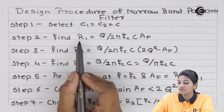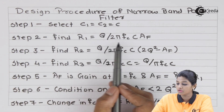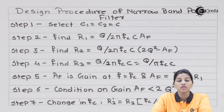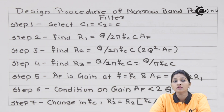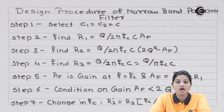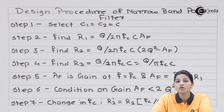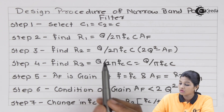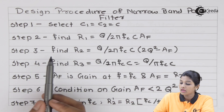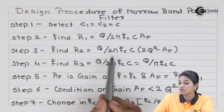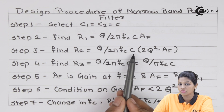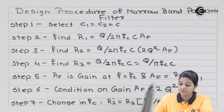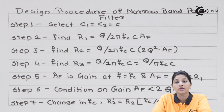Step two: find resistor R1 using the formula R1 = Q / (2π × fc × C × Af), where Q factor and gain Af must be selected carefully since all resistor values depend on them. Step three: find R3 using R3 = Q / (π × fc × C). Step four: find R2 using R2 = Q / (2π × fc × C × (2Q² − Af)).